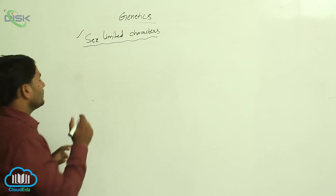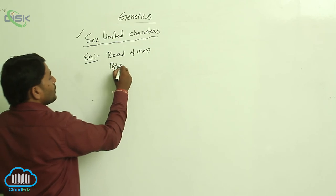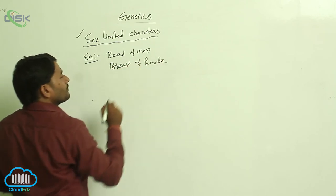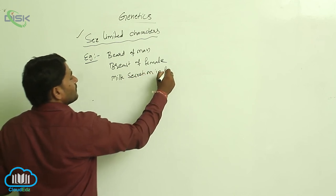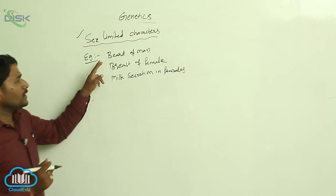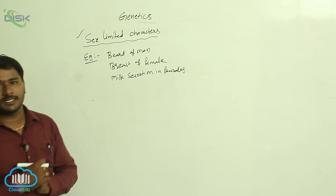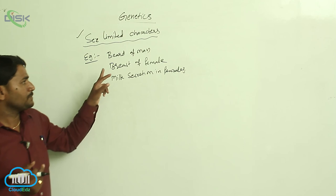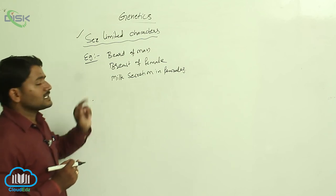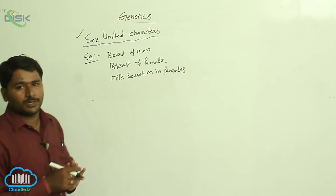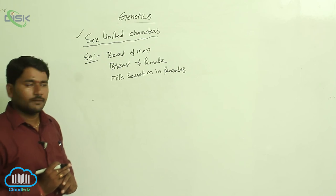The expression of character depends upon the sex. Examples include: beard in men, breast in females, and milk secretion in females. These genes are actually present in both sexes — males also have breast and milk secretion genes — but they are not expressing the character. Some characters are expressed depending upon the sex of the individual. That is sex-limited characters — character expression is limited to the sex.